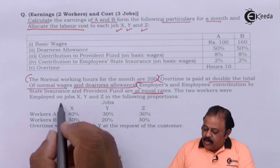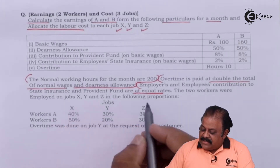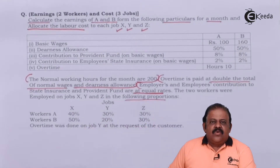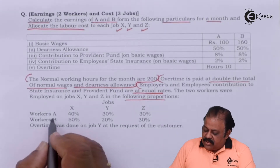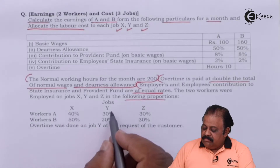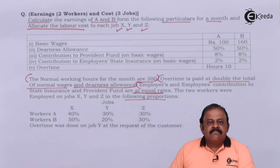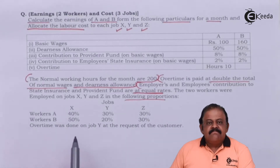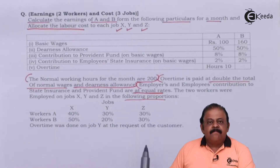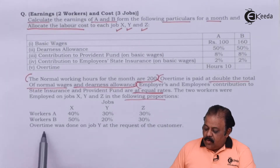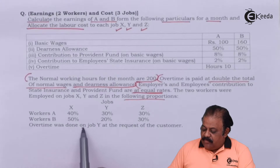The two workers were employed on jobs X, Y, and Z in the following proportion. Worker A: Job X 40%, Job Y 30%, Job Z 30%. Worker B: Job X 50%, Job Y 20%, Job Z 30%. Overtime was done on Job Y.